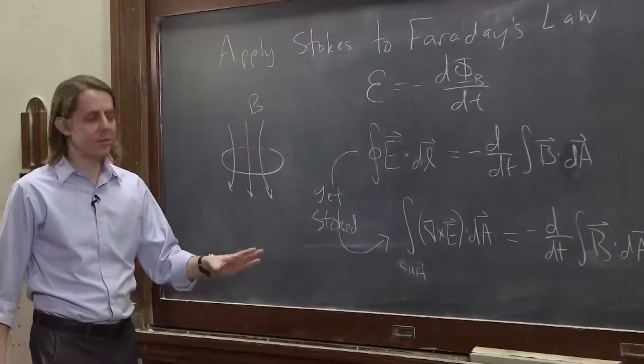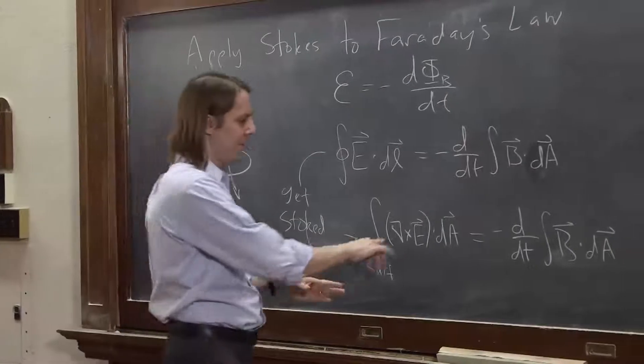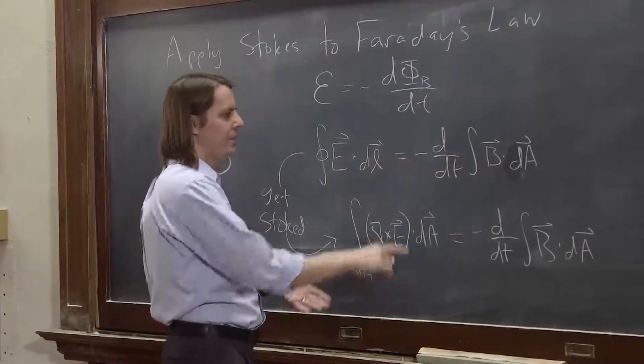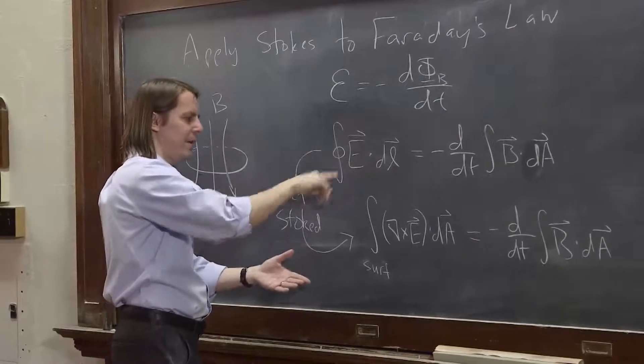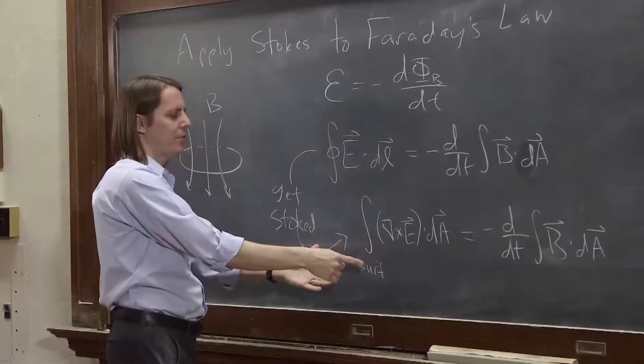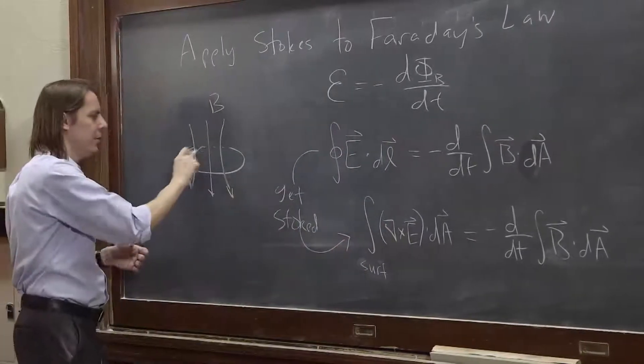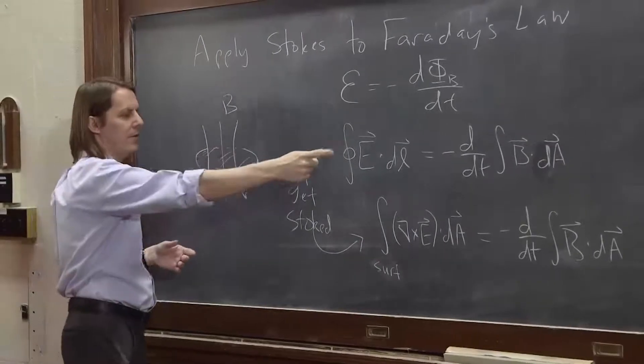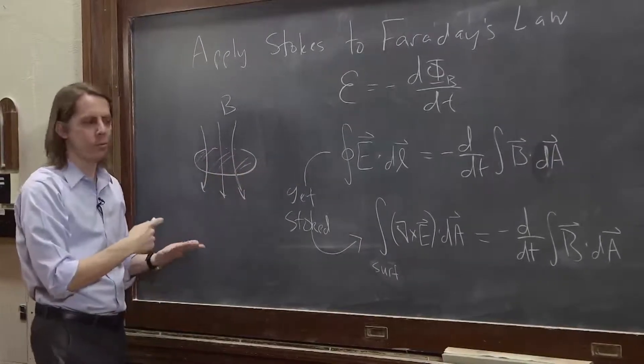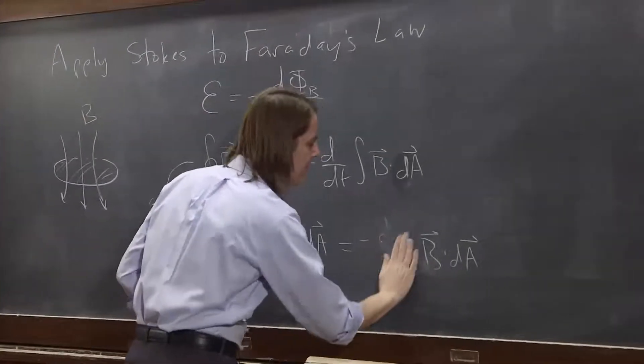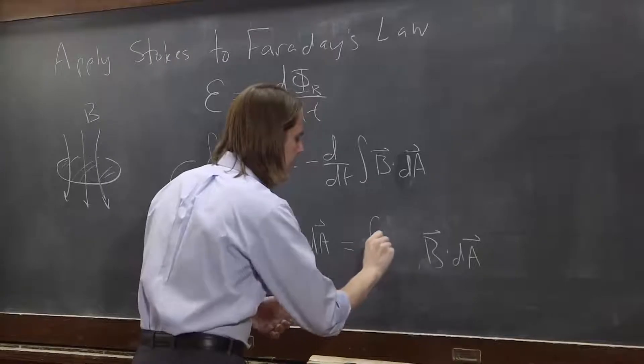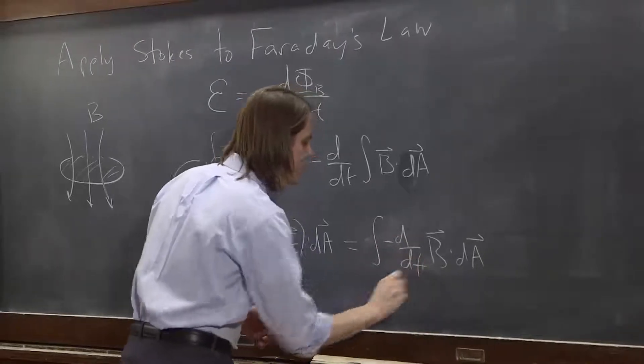And when you do that, suddenly you see, you have the same thing inside the integral of the same area. When we went from the E dot dl to del cross E, we're talking about a surface integral on this area of the loop. And the flux of the B field also applies to that same surface. And I should stick the d dt inside the integral, and the negative sign for that matter, minus d dt.